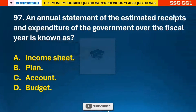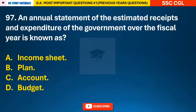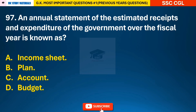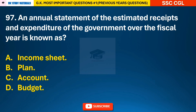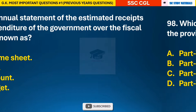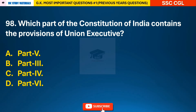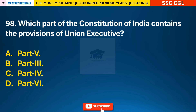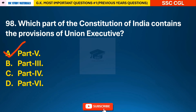Question 97: An annual statement of the estimated receipts and expenditure of the government over the fiscal year is known as — answer D: Budget. Question 98: Which part of the Constitution of India contains the provisions of the Union Executive? — answer A: Part 5.